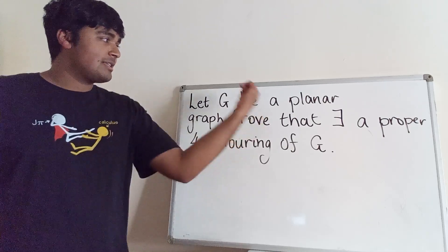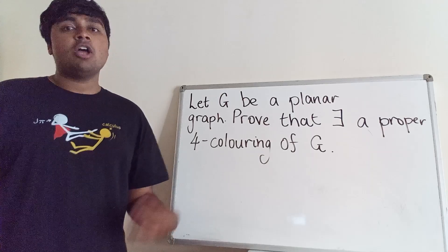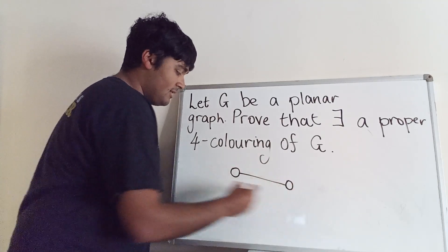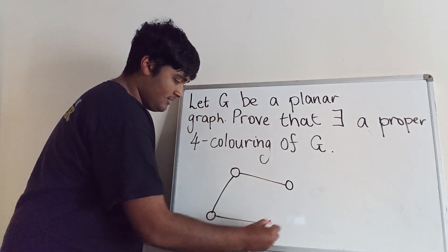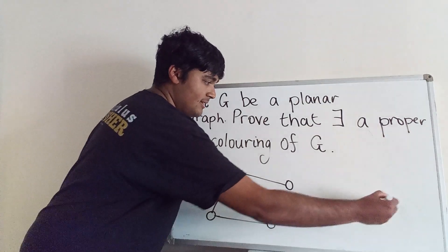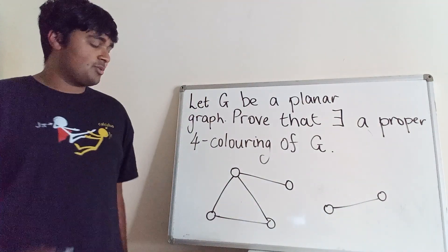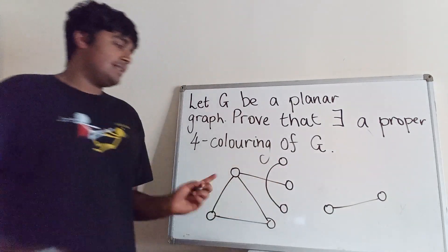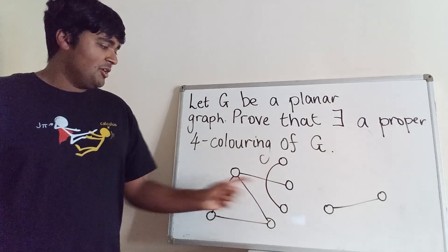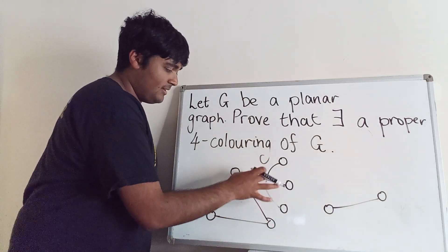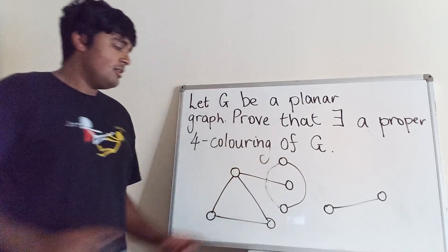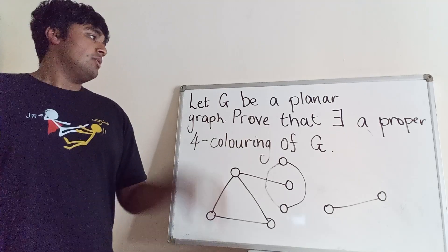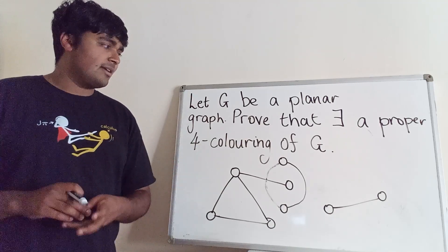So what is a planar graph? It's simply a graph where the edges only meet at vertices. For example, a graph like this is planar because none of the edges cross one another. However, if I add an edge that crosses another edge, the graph is no longer planar — though I can fix that by rerouting the edge. So provided none of the edges cross, we have a planar graph, and we want to prove that there exists a four-colouring of G.